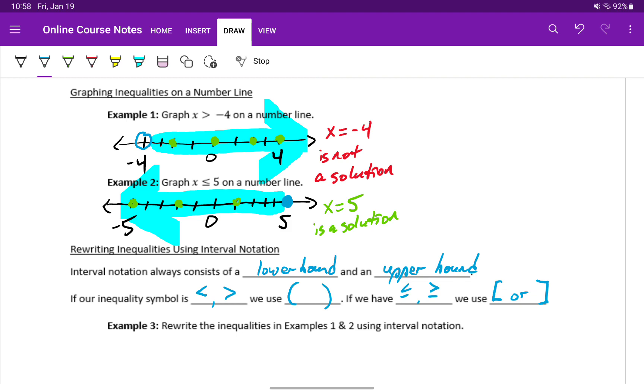Looking back at example one, we had the inequality statement x is greater than negative four. That means the smallest value, the lower bound for our interval, would be negative four. We're using a rounded parentheses because negative four is not a solution. That's why we use the open circle on the number line.